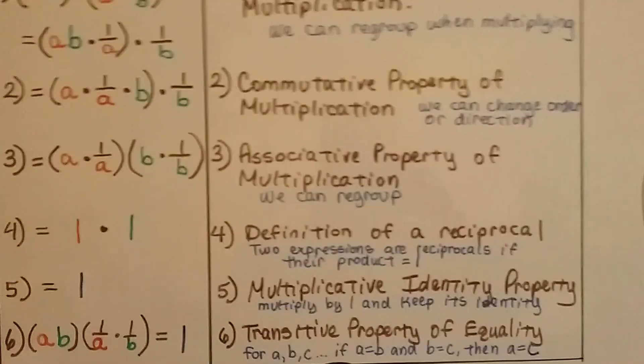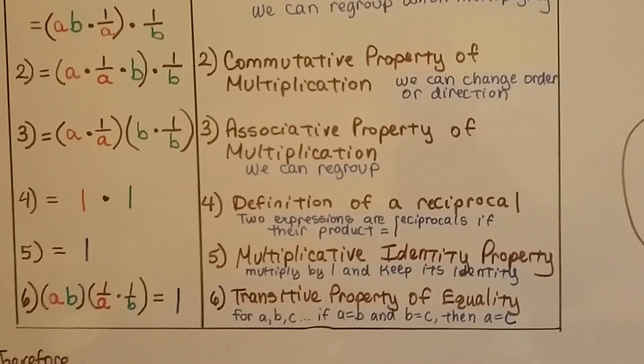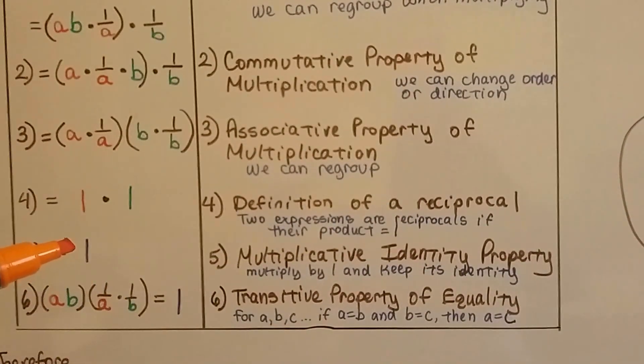1 times 1 is 1. That's the multiplicative identity property. It says if we multiply anything by 1, it keeps its identity.